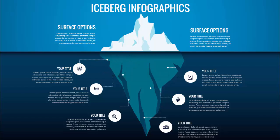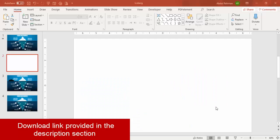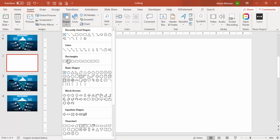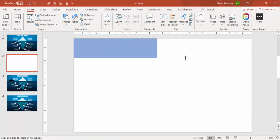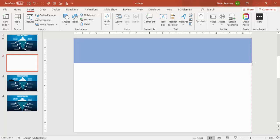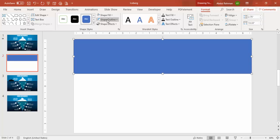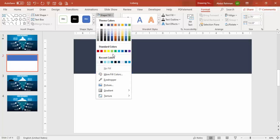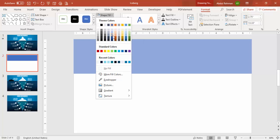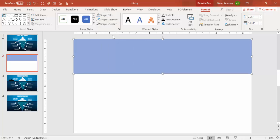Let's see how to do this iceberg infographic slide in PowerPoint. Add a new slide and go to Insert > Shapes, select the Rectangle, and draw it covering the top part of the slide. Set the height to 2.75, remove the shape outline, and give it a light fill color — we can change the color later.